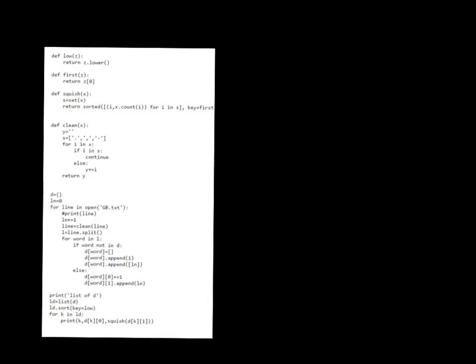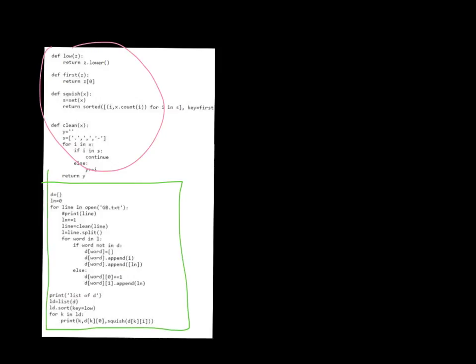Here is the whole program — you can download it and test it from the handout section. The top part contains the helper functions we just saw. The main program, which is below, is the one that creates the dictionary and enters the values into it. We're going to concentrate on that part now.